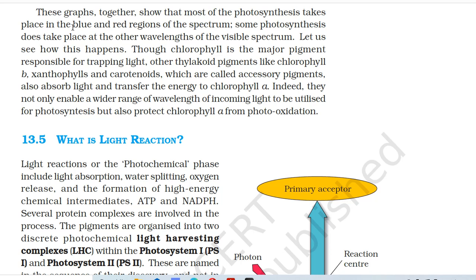Though chlorophyll is the major pigment responsible for trapping light, other thylakoid pigments like chlorophyll B, xanthophylls, and carotenoids — which are called accessory pigments — also absorb light and transfer the energy to chlorophyll A. Indeed, they not only enable a wider range of wavelengths of incoming light to be utilized for photosynthesis, but also protect chlorophyll A from photo-oxidation.